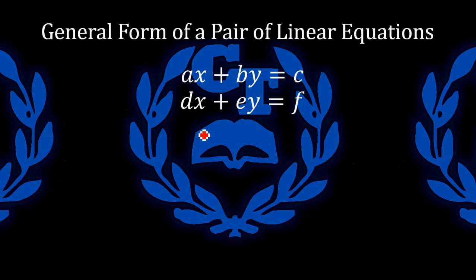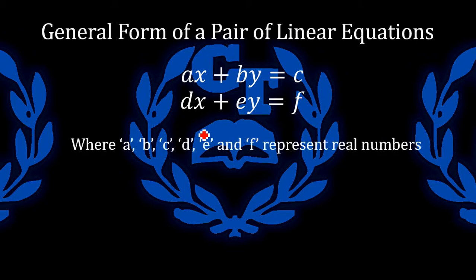So this here is what a pair of simultaneous equations would look like or linear equations. And the A, B, C, D, E and F just simply represent real numbers.